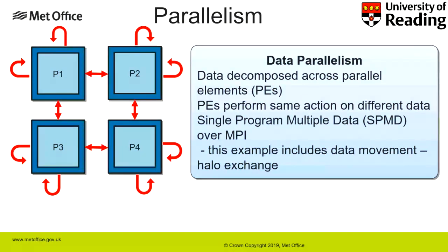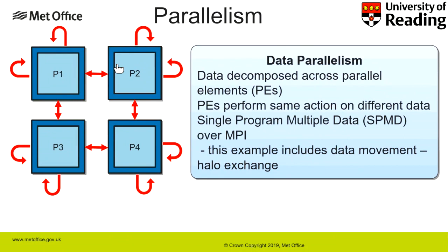Data parallelism includes data movement called a halo exchange. If we have four processes P1, P2, P3, and P4, each has part of the domain, and we have overlapping halo regions that appear in neighboring processes and are updated by communication. The calculation of different processes is not completely independent — it relies on some overlap between the two. Most large models already use this form of data parallelism.